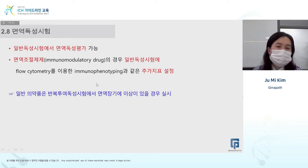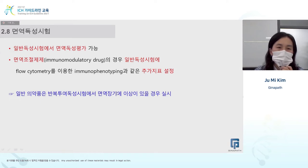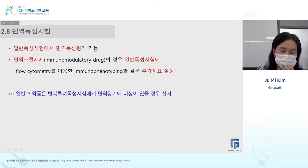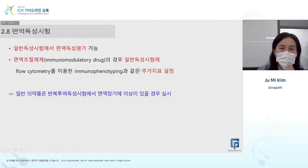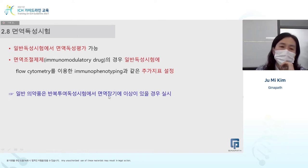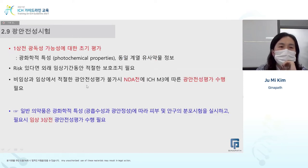For immunotoxicity, if there is an abnormality in lymph nodes, spleen, or any other immune-related organs, immunotoxicity testing is required. For anti-cancer drugs, immunotoxicity can be done as part of general toxicity testing, and immunotoxic indicators can be included as parameters within general toxicity testing.